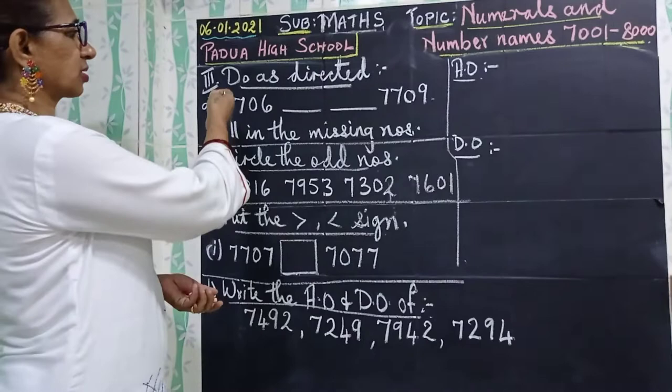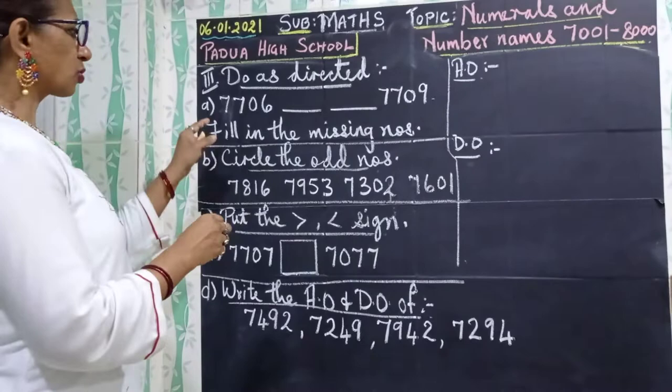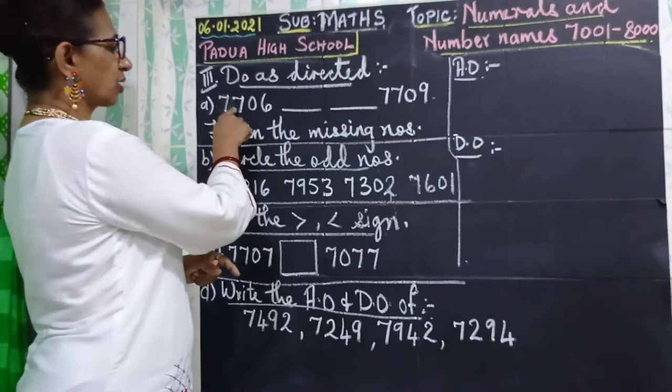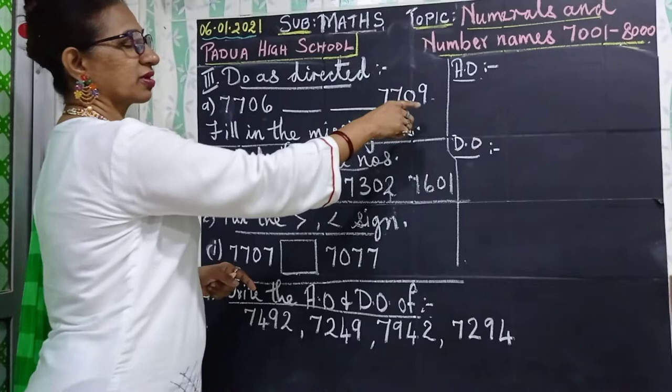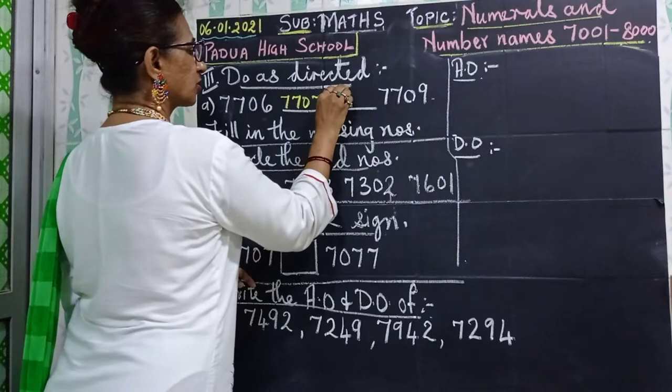First you have written your numerals, then I gave you number names to write, and now we are doing 'Do as Directed.' So here is fill in the missing numbers. The numbers given are 7706, then there are two missing numbers, and then 7709. Naturally it is just skipping one number, so: 7707, 7708, and then 7709.